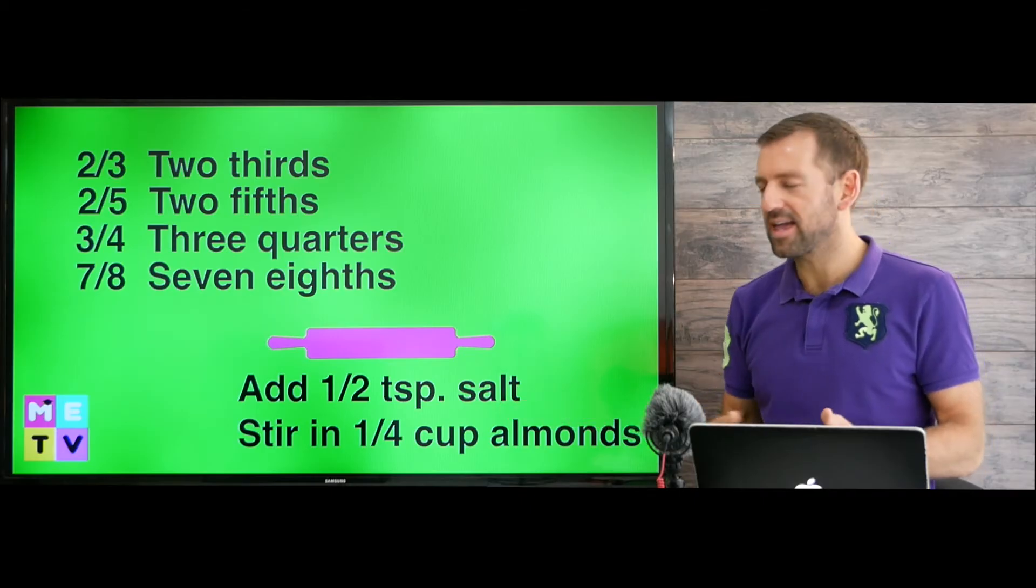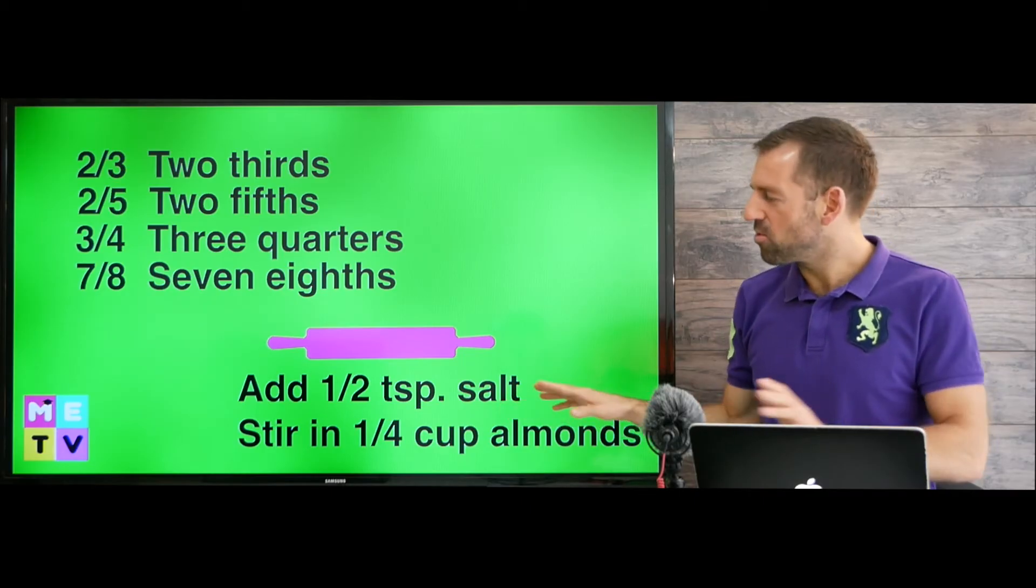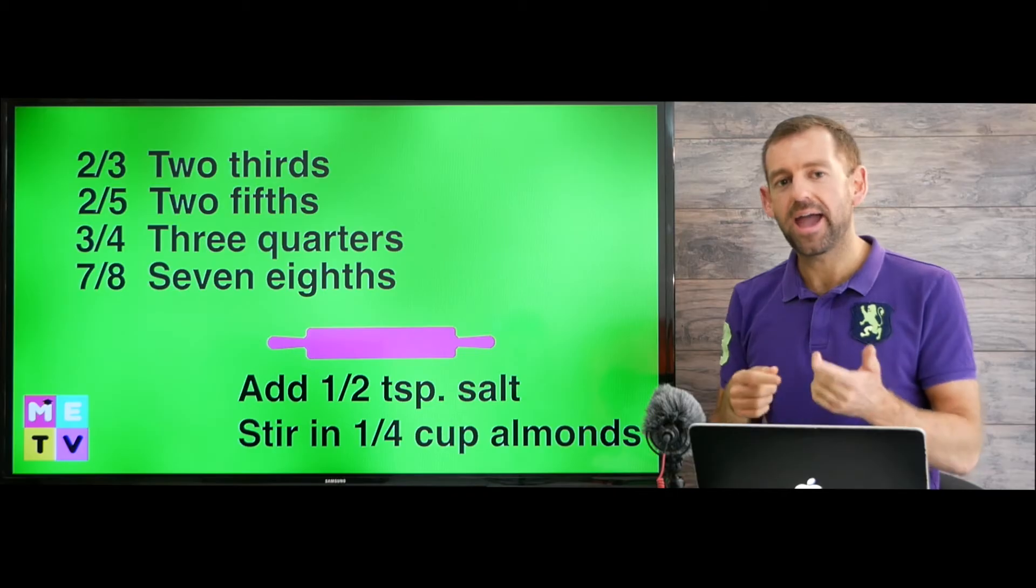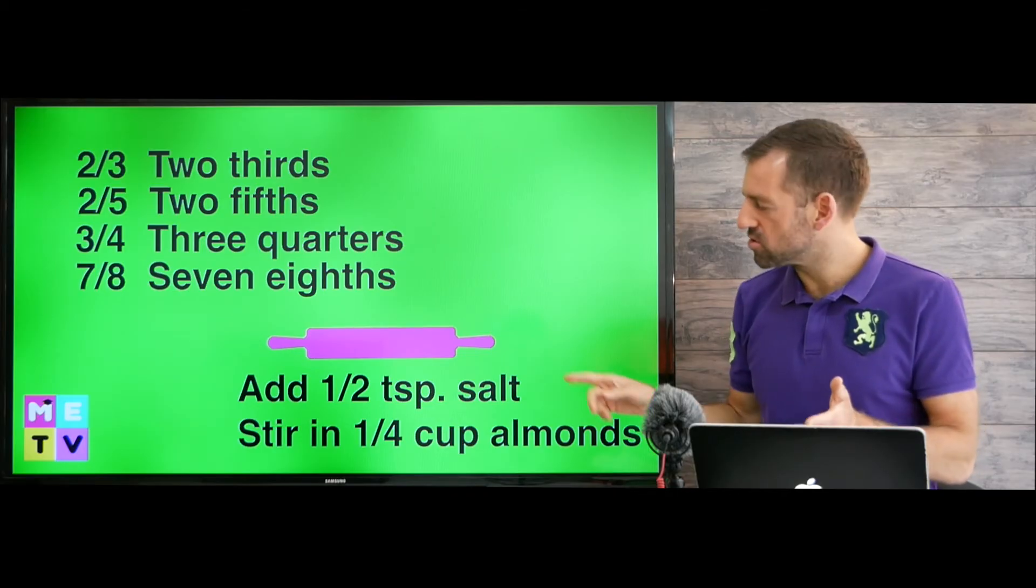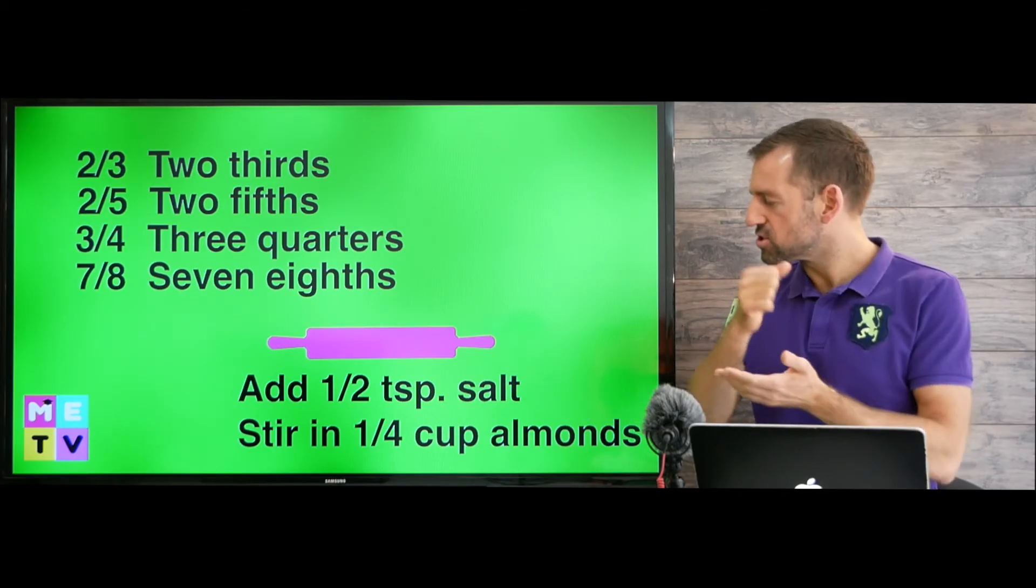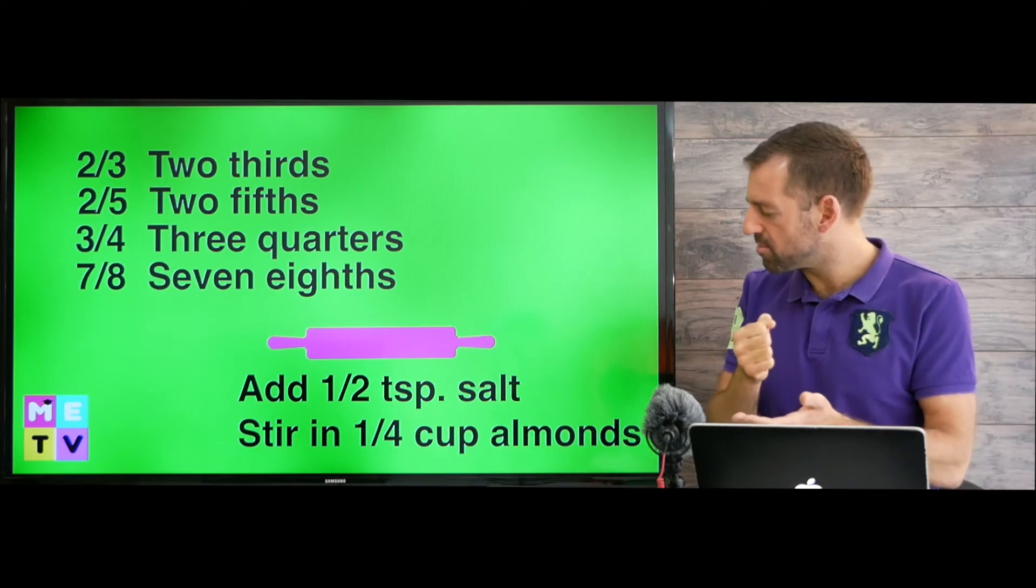So let's imagine we're making a recipe. It will probably look something like this. It'll say add half a teaspoon salt or stir in a quarter cup almonds.